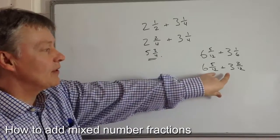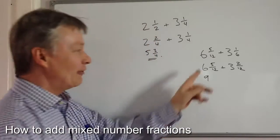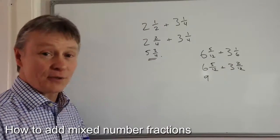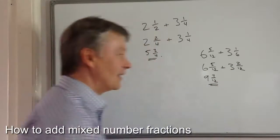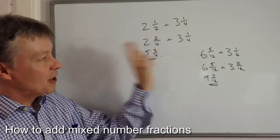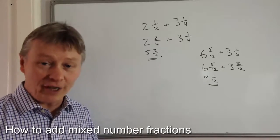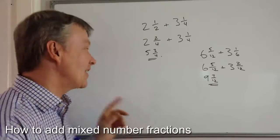And then I'm going to add the whole numbers. Six plus three is nine. And I've got five over twelve plus two over twelve, seven over twelve. And that would be the answer to that particular question. So hopefully there's a couple of examples that will work okay for you. And there are some follow-up exercises that you can have a look as well.